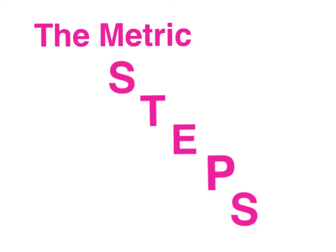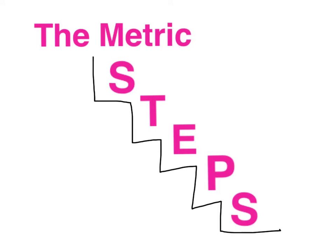A trick to help us remember about metric conversions is to think of them as steps. Take a look at this set of steps. You will notice that meter, gram, and liter are all found in the middle of the steps. These three measurements are often called units. They are found in the middle of the steps because that is the unit that we are measuring in.